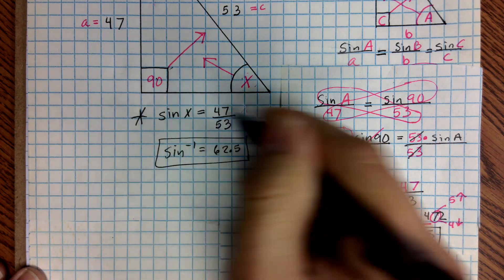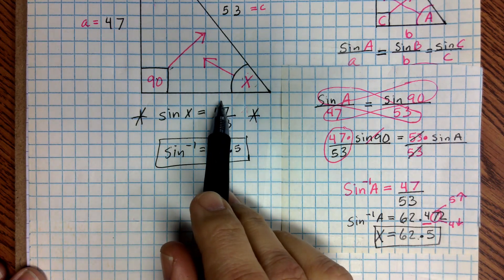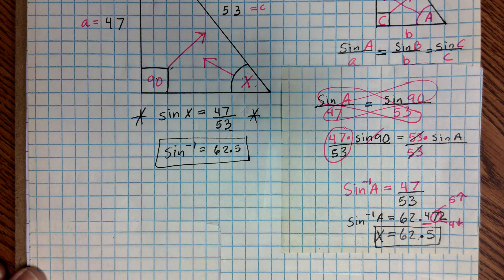So really, for these, all you really need to remember is this, right? Opposite over hypotenuse, and then use your inverse sine function in your calculator.